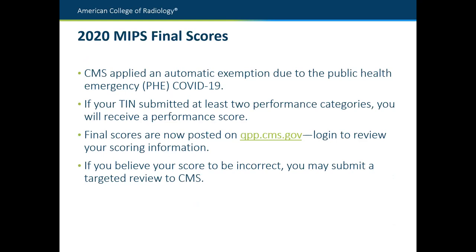Your MIPS scores are out now. They were released on August 2nd, which is a little later than usual — they usually come out around July. CMS applied an automatic exemption to non-submitters, so if you didn't submit for last year, you were automatically given a neutral payment adjustment and won't suffer any negative adjustments. If you did submit data, you will receive a performance score, and you can look at that final score on qpp.cms.gov. You need to log in to your CMS account to review that information.